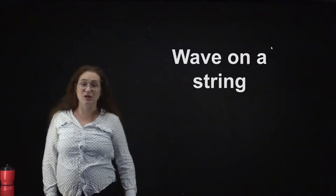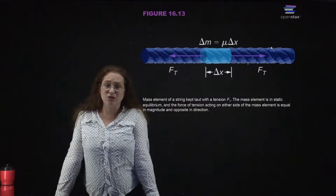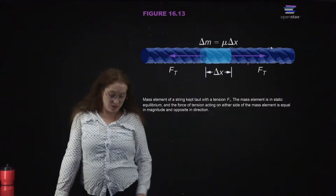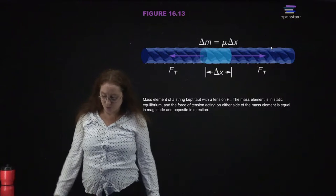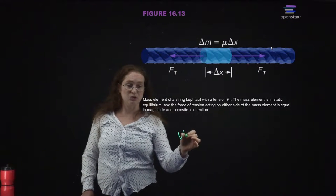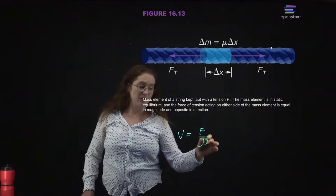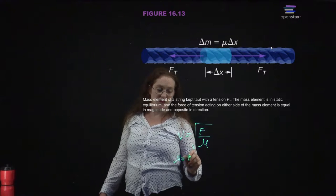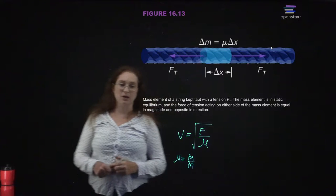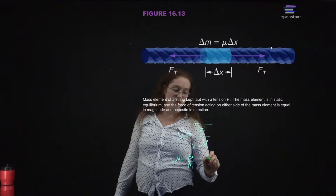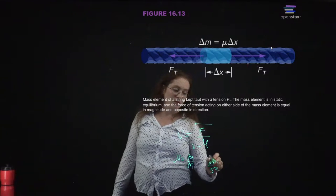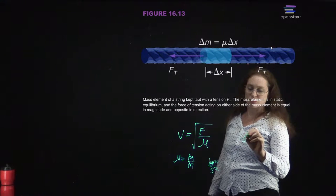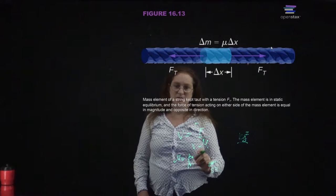Now we're going to use this to describe waves on a string. When you have a string under tension, like a guitar string, the speed of the wave moving along that string is the square root of the force divided by the linear density of the string. The linear density has units of kilograms per meter, and the tension has units of newtons or kilogram meters per second squared.